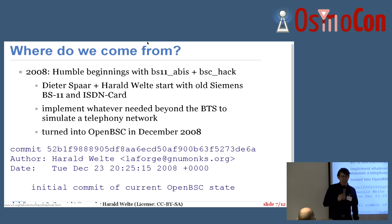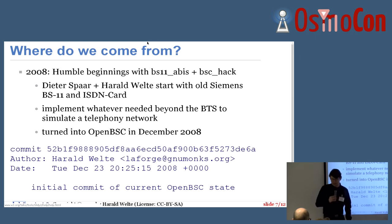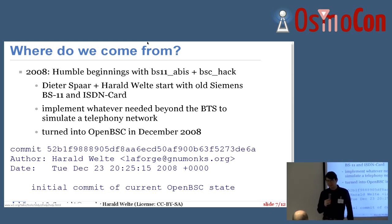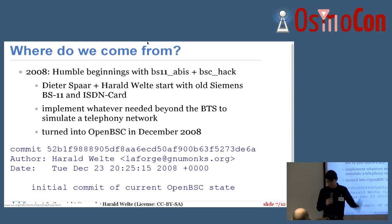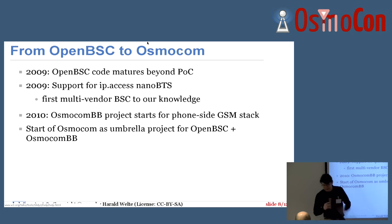Where do we come from? In 2008, Dieter and I started with some old Siemens base station hardware that was available on eBay. There were some old Siemens BTSs available with E1 interface — we had to connect them using ISDN cards; there's no IP or Ethernet in those base stations. We implemented whatever was needed beyond this BTS hardware to have a self-contained small telephony network. This was initially called BS11-ABIS — an ABIS implementation to talk to the BS11 — then we called it OpenBSC, which is not really a good name because it's not just a BSC. The first commit was in December 2008.